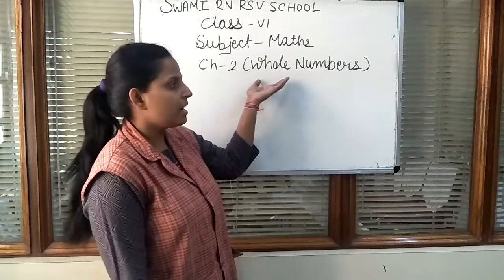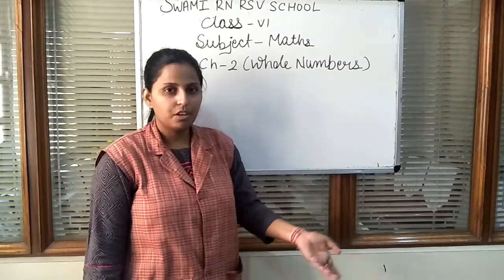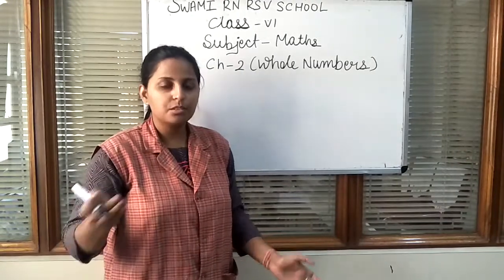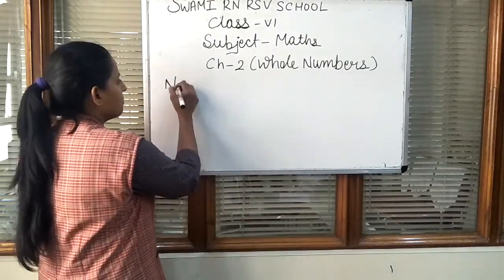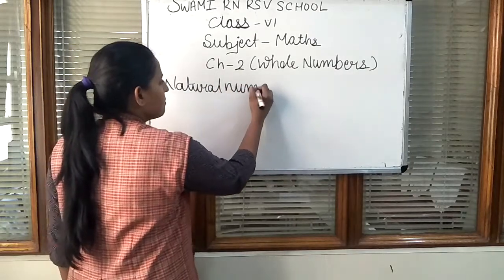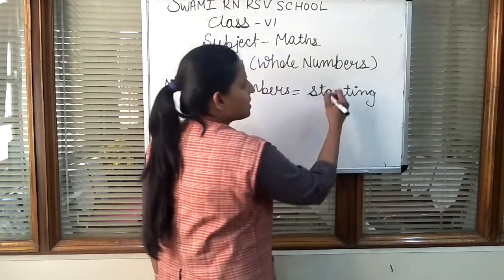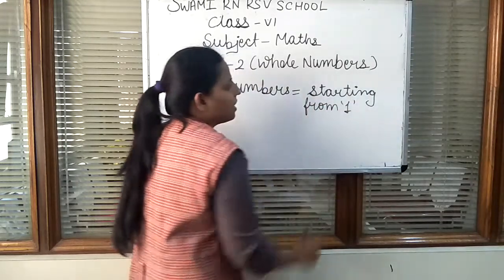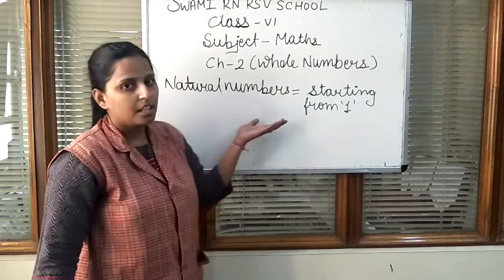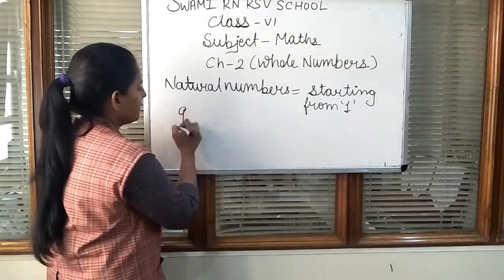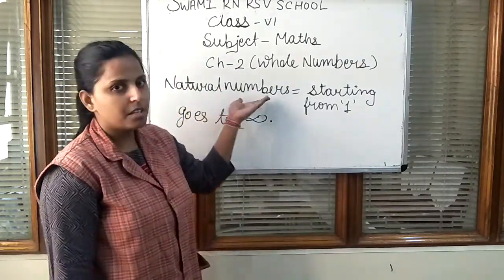There are about 8 groups, and we are having the whole numbers. Before moving to whole numbers, when we start the counting of any object, we start from 1. The starting number is 1 and goes to infinity. This type of number is called natural numbers. The natural numbers include those numbers starting from 1, because naturally we start counting from 1. Here, starting from 1 and goes to infinity — infinity means there is no defined last number. This is the first group of numbers: natural numbers.